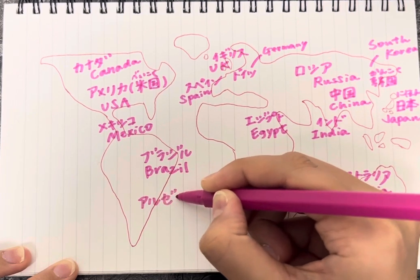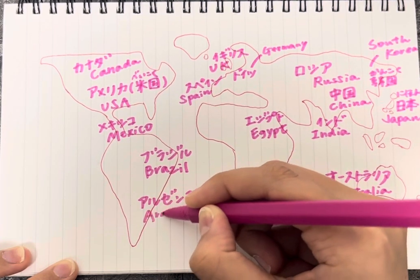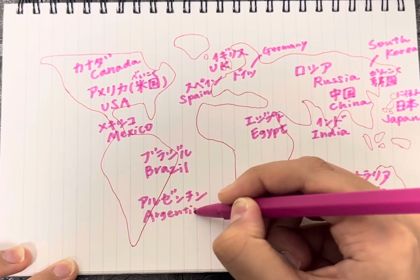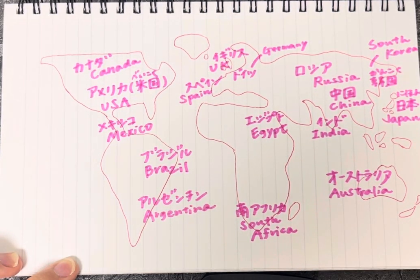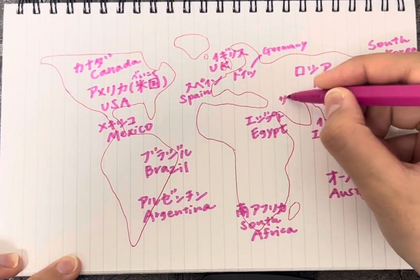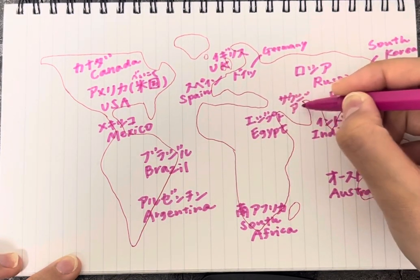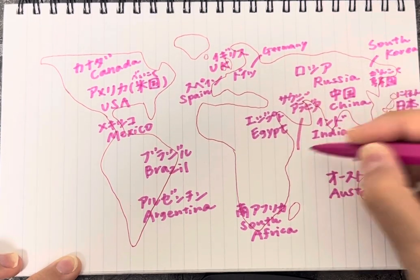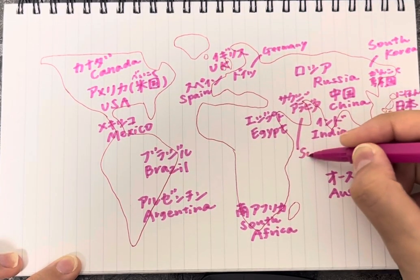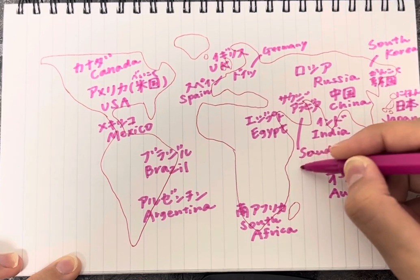Argentina is Aruzenchin. Saudi Arabia is Saujiarabia.